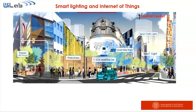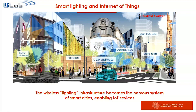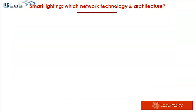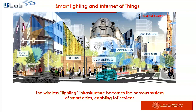In fact, once you have a smart light pole that can communicate with a control center by means of a wireless communication technology, you can use the same wireless connectivity to collect data from cars for vehicle-to-infrastructure communication, or from smart parking lots, smart bike racks, and so on. So the wireless light infrastructure becomes the nervous system of smart cities and it enables IoT services.